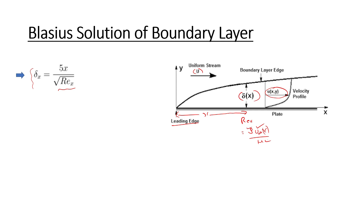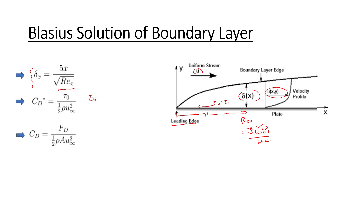We need to see what is C_d, the coefficient of drag. It is defined as tau_0 divided by half rho u_infinity squared, where tau_0 is the wall shear stress. It can also be written as C_d equals F_d divided by half rho A u_infinity squared, because tau_0 equals F_d divided by A, where A is the surface area.